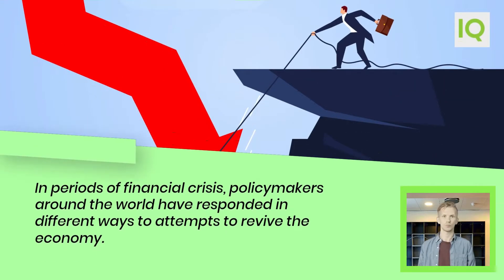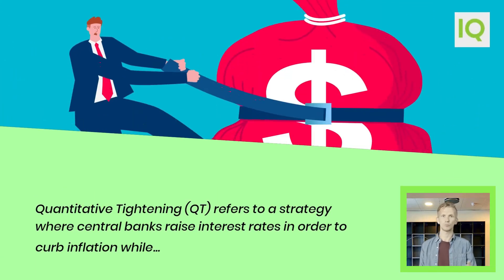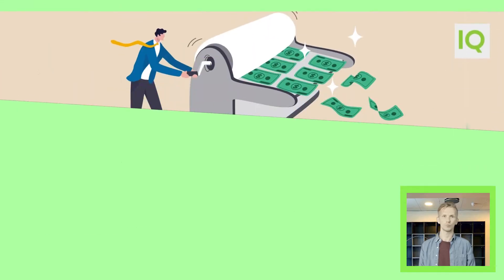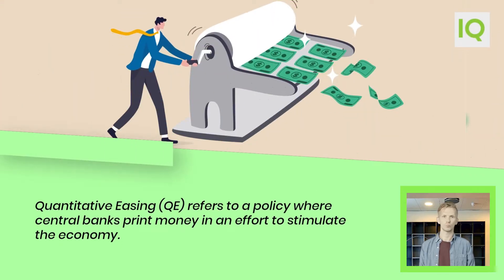In periods of financial crisis, policymakers around the world have responded in different ways to attempts to revive the economy. Quantitative tightening, QT, refers to a strategy where central banks raise interest rates in order to curb inflation. Quantitative easing, QE, refers to a policy where central banks print money in an effort to stimulate the economy.